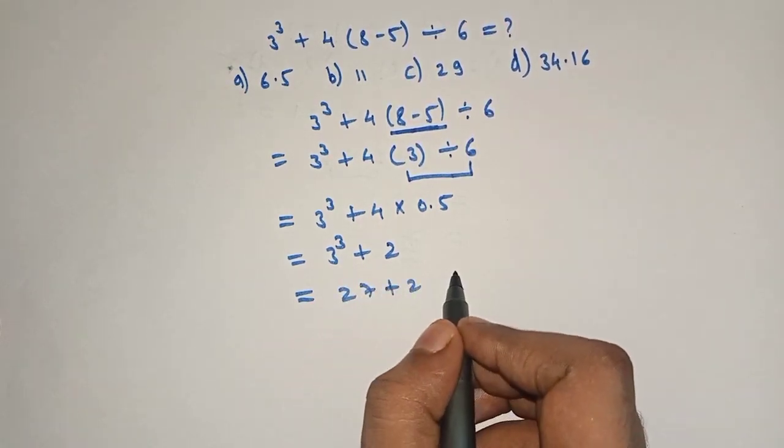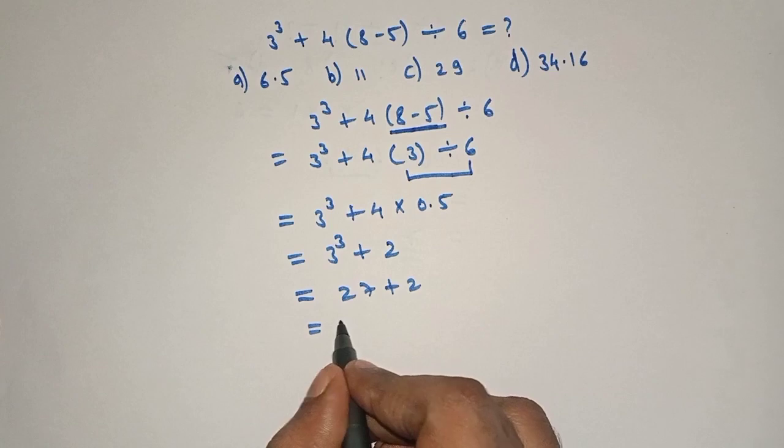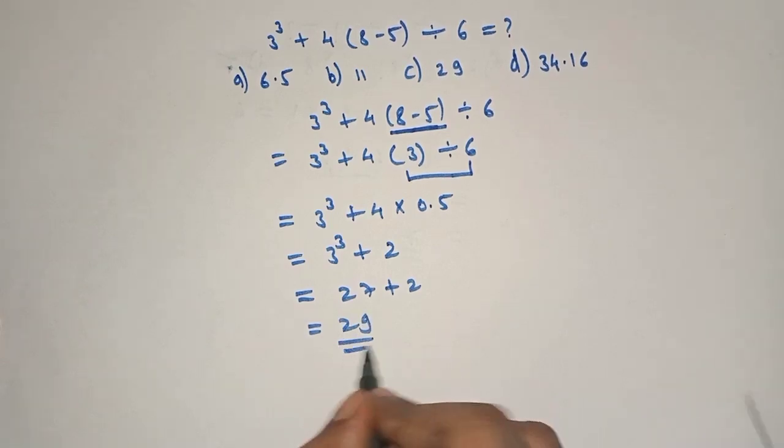Plus 2. 27 plus 2 is equal to 29, which is our right answer. Option C is our right answer.